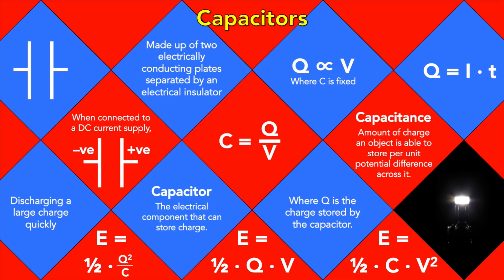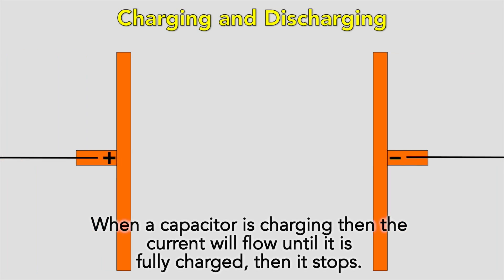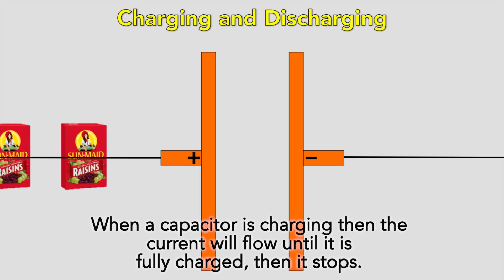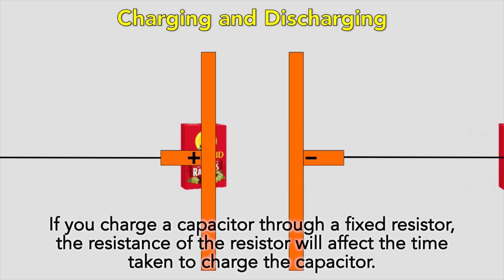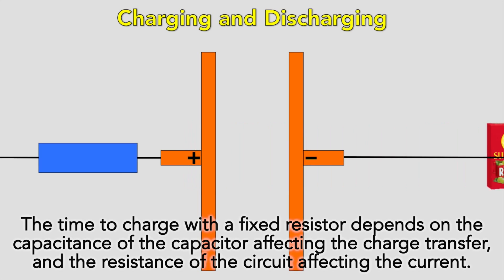Charging and discharging — last topic of this video. When a capacitor is charging, the current will flow until it is fully charged, and then it stops. This is when the potential difference across the capacitor is equal to the potential difference across the power supply. If you charge a capacitor through a fixed resistor, the resistance will affect the time taken to charge. The time to charge depends on the capacitance of the capacitor affecting the charge transfer, and the resistance of the circuit affecting the current.